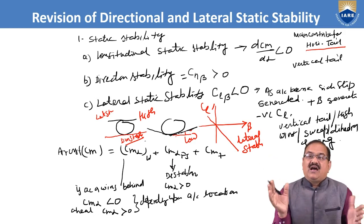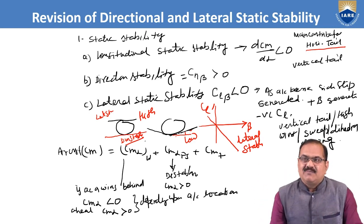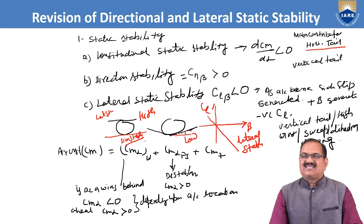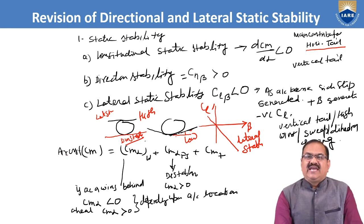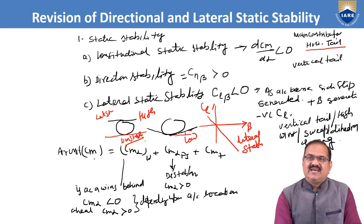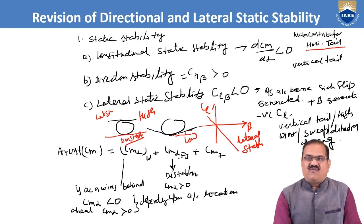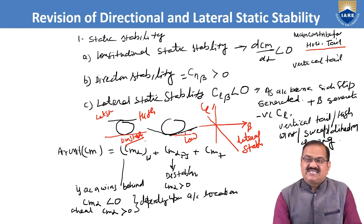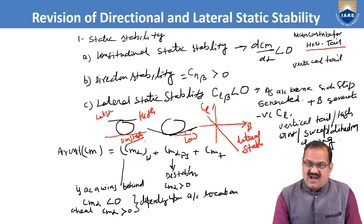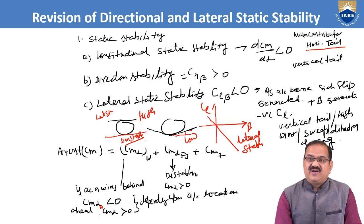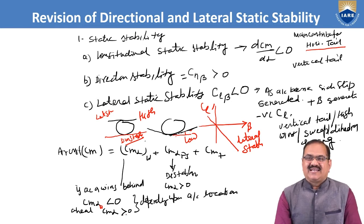If the wing tips are above the horizontal plane, the aircraft is laterally stable. So for lateral static stability, the wing should either be high-wing, or if it is low-wing, dihedral must be provided. The Cm_alpha of the aircraft is the summation of Cm_alpha of the wing, Cm_alpha of the fuselage, and Cm_alpha of the tail. Cm_alpha of the wing depends on the position of the aerodynamic center relative to the center of gravity.